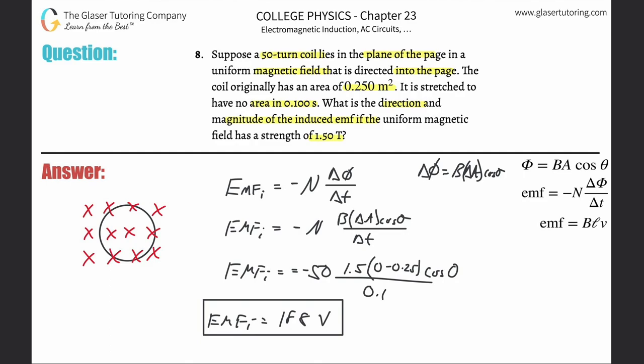Therefore there will be a current that will serve to oppose that change. As this gets smaller, there's less x's inside, so there's going to be more x's being produced to counteract that change. If you think about this smaller wire now,